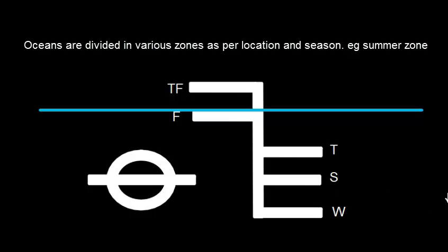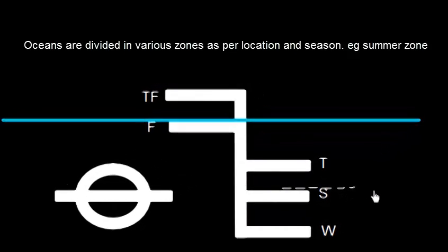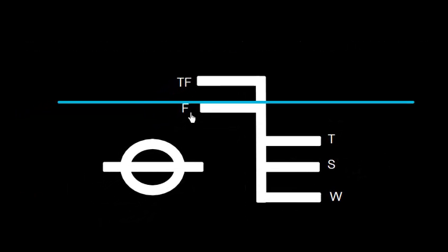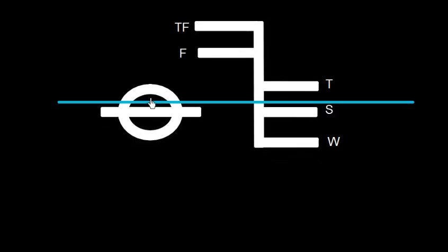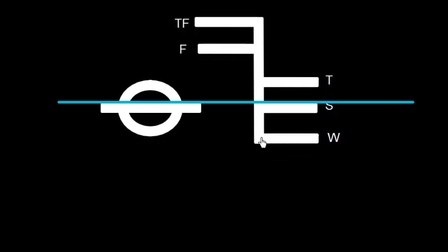The summer load line is indicated by the upper edge of the line. The F mark is the fresh water load line — the line up to which the ship can be loaded in fresh water in the summer zone. It must be noted that when a ship loaded to the F mark in fresh water goes into salt water, the ship will rise and come up to the S level.